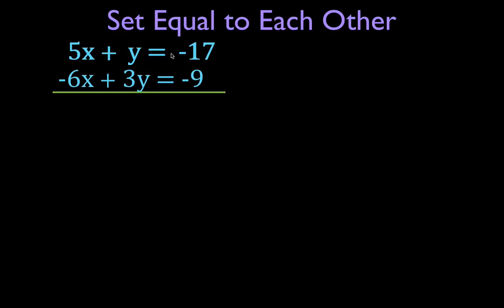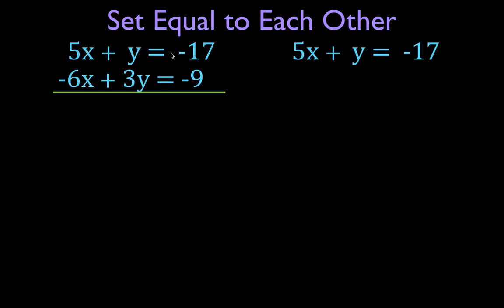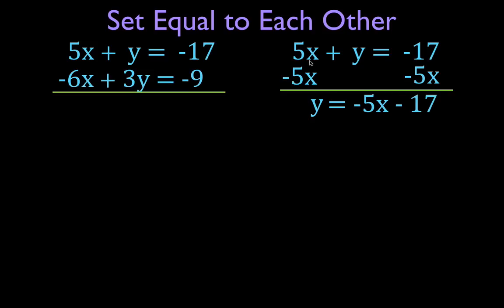We're going to take the first equation and solve it for y. In order to do that, I have plus 5x, so I need to subtract 5x from both sides. On the left-hand side, the 5x and minus 5x go to 0, leaving me with y equals. On the right-hand side, I'm left with minus 5x minus 17. And I have solved the first equation for y.